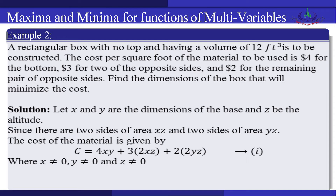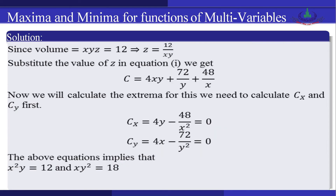We know that Volume = xyz = 12, therefore z = 12/(xy). Substituting the value of z into the cost equation, we get C = 4xy + 72/y + 48/x. Now we will calculate the extrema of this function by finding the partial derivatives C_x and C_y.